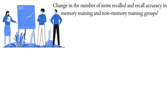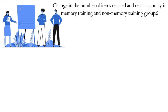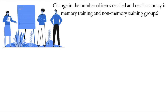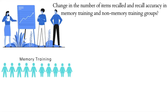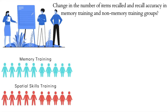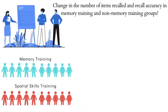Suppose you are designing a study wherein you want to discern the changes in the number of items recalled and the recall accuracy of those items when participants are subjected to a memory-specific training versus a non-memory training group. You recruit a population of participants and then randomly allocate them to two different groups: memory training versus a non-memory training group, which in this case could be spatial skills training. Note that at this stage you haven't actively subjected any participants to any type of training — you have just divided them.